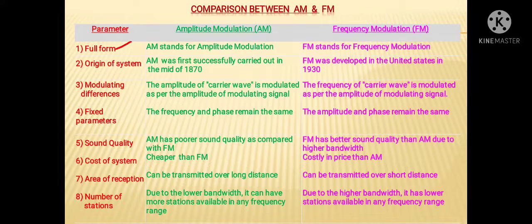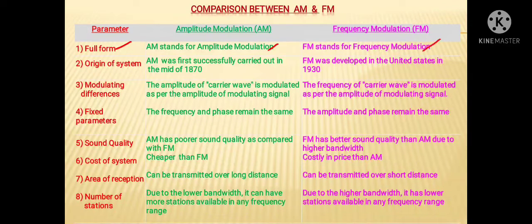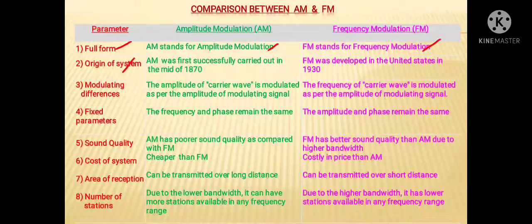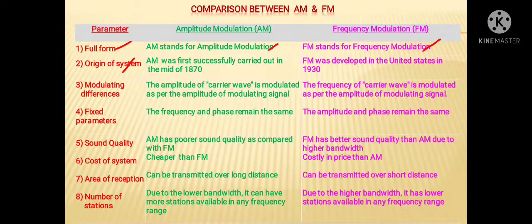AM stands for Amplitude Modulation, whereas FM stands for Frequency Modulation. If we talk about the origin of the system, then AM was first successfully carried out in the mid of 1870, whereas FM was developed in the United States in 1930.